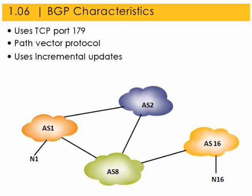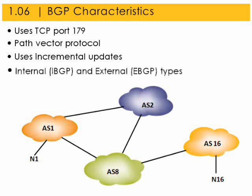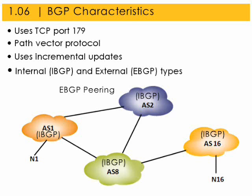BGP uses TCP port 179 for confirmed communication. It is a path vector protocol characterized by using incremental updates. Two types of BGP exist: internal BGP (iBGP) and external BGP (eBGP). iBGP is used to carry internet routes across an autonomous system within an ISP, while eBGP is used for exchanging prefixes called Network Layer Reachability Information (NLRIs) with other autonomous systems and for route policy implementation.